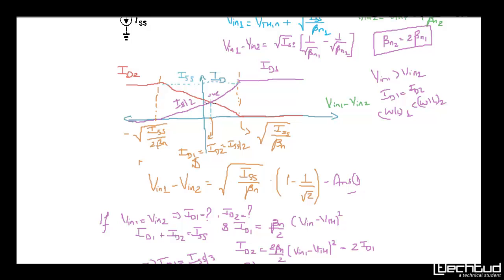So vin minus vin2 is positive here. Similarly for the second case you can understand by similar logic. So at this point ISS by 2 the vin1 minus vin2 will be under root of ISS by vtn times 1 minus 1 by under root 2.